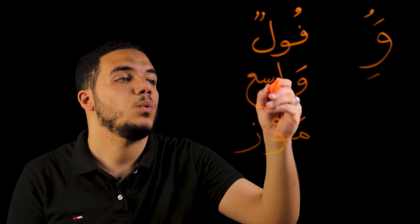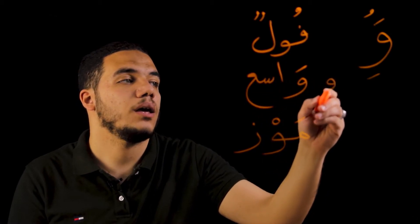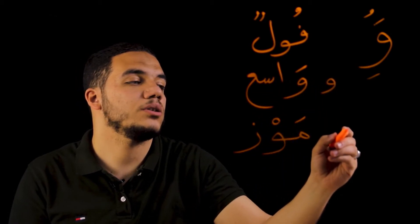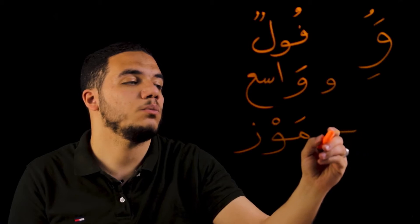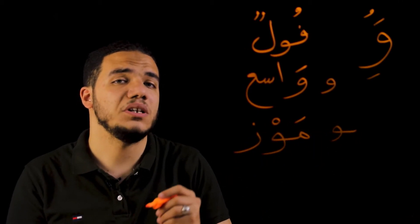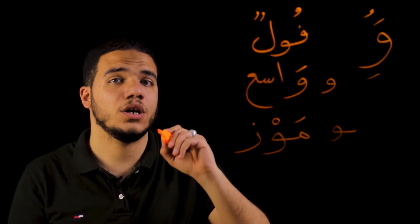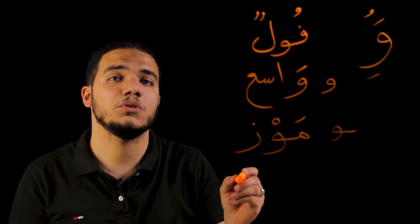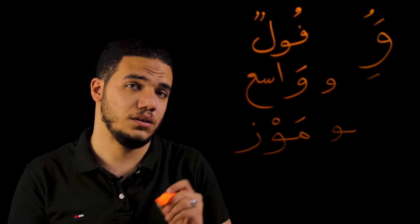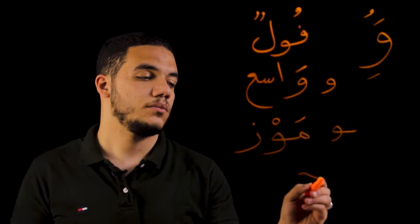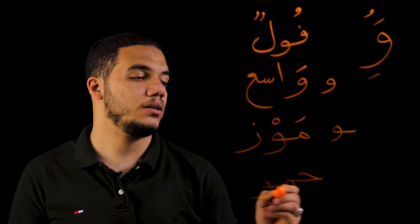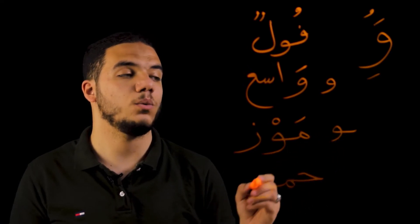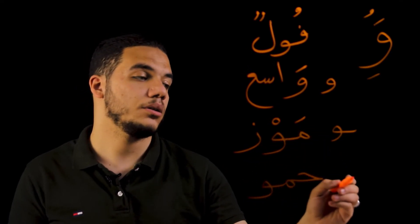Let's go down. In the beginning it looks like that — waa, it's written like that. In the middle it's connected only from one way. At the end it could be connected and not connected. It could be connected like that at the end, and it also looks like the one in the middle.